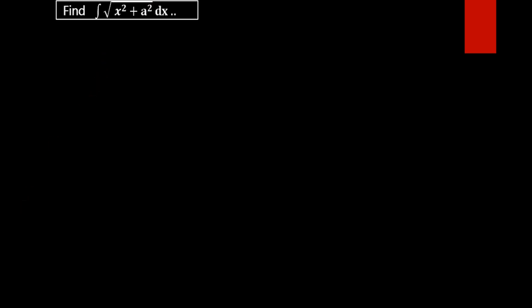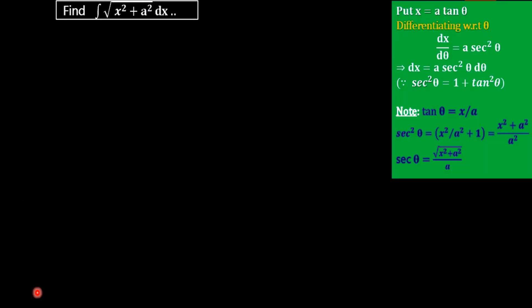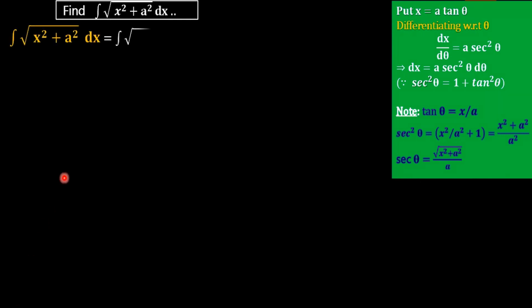For that, we are going to use the substitution method. We are taking x equal to a times tan theta. On differentiating with respect to theta, we will get dx/dθ equals a sec squared theta, that is the derivative of tan theta, and dx equals a sec squared theta dθ. Now by substituting these values, with x equal to a tan theta.